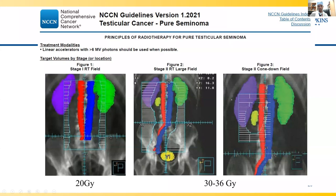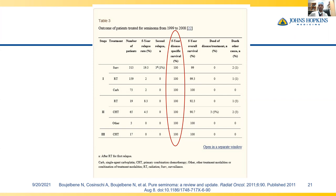Looking at long-term studies, five-year disease-specific survival rates are very comparable between radiation and carboplatin for seminoma — 100% survival at five years for Stage 1, 2, and 3. So when patients ask which is better between chemotherapy and radiation for seminoma, they are essentially equivalent in terms of cancer control.